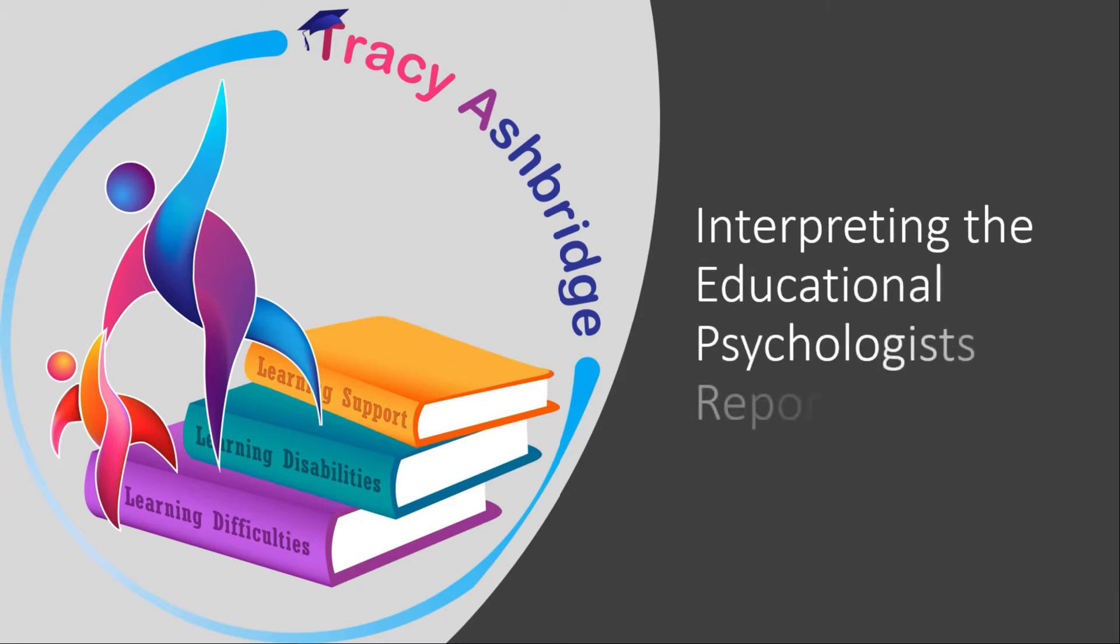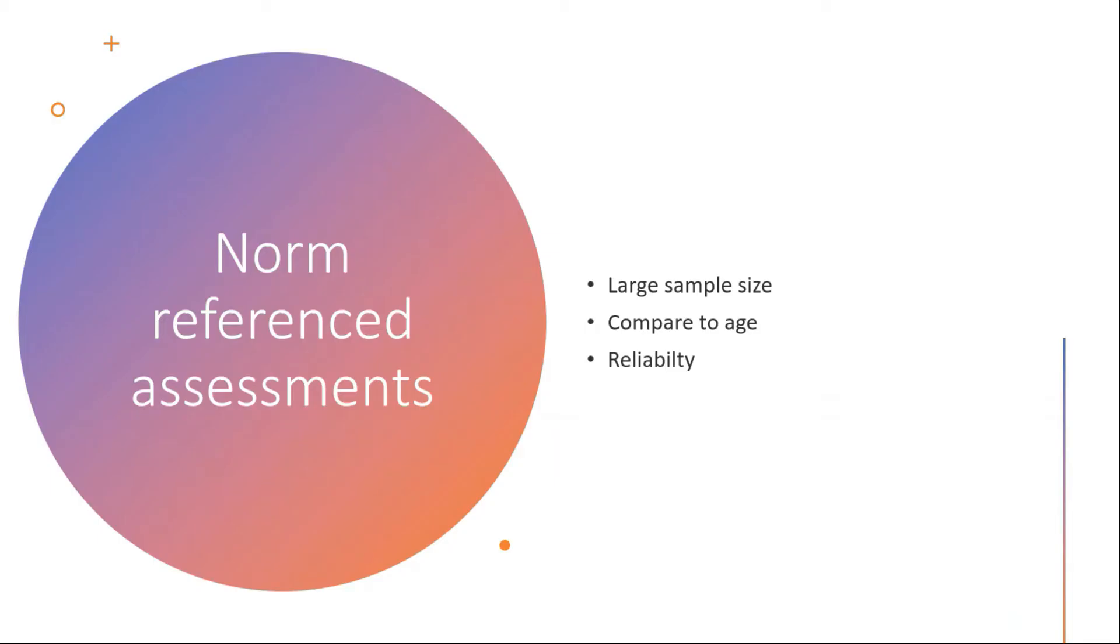Hi, I'm Tracy Ashbridge and this video will go through how to interpret the psychologist report. You may have been to see an educational psychologist and they have written a report about your child. They've done a cognitive assessment looking at their full-scale IQ and different areas of the curriculum, but what do those numbers really mean and how do you interpret and understand them?